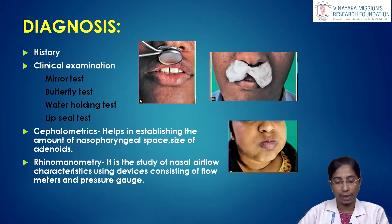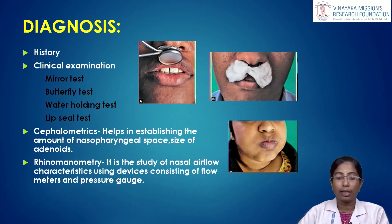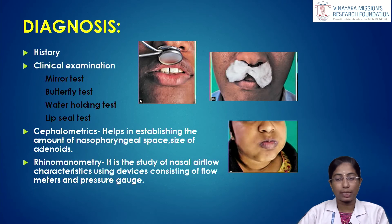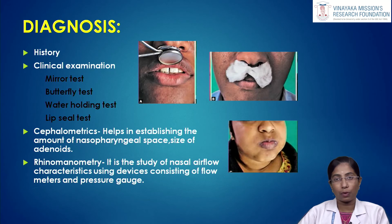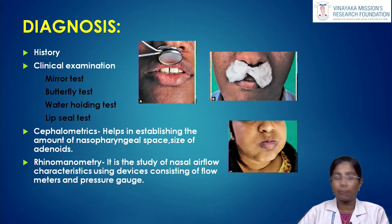Diagnosis of mouth breathing begins with proper history taking from parents and clinical examination. Four commonly used tests are the mirror test, butterfly test, water holding test, and lip seal test. In the mirror test, a double-sided mouth mirror is placed below the nose and upper lip — fogging on the nose side indicates nasal breathing, while fogging on the lip side indicates mouth breathing. The cotton (butterfly) test uses butterfly-shaped cotton placed below the nose — if the patient breathes through the nose, the cotton will move.